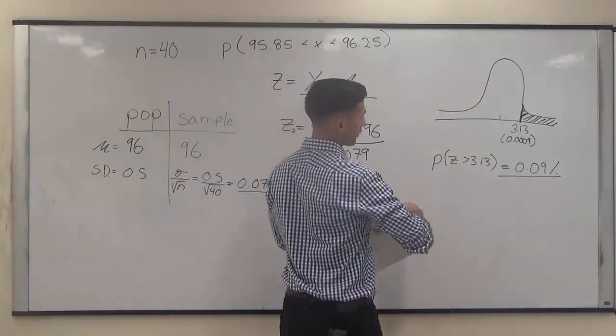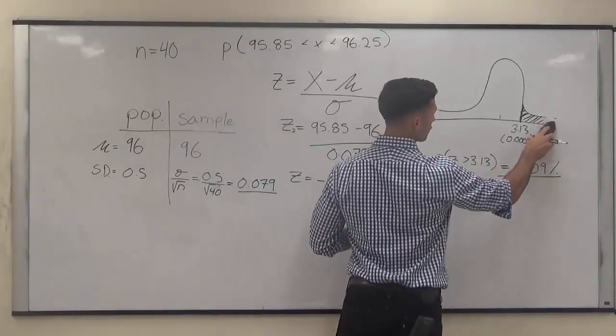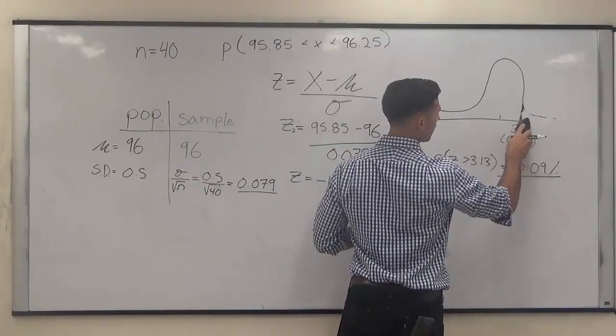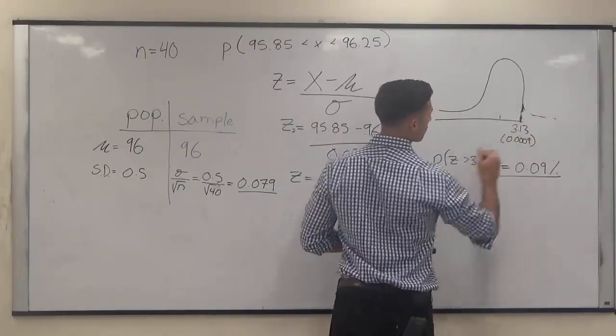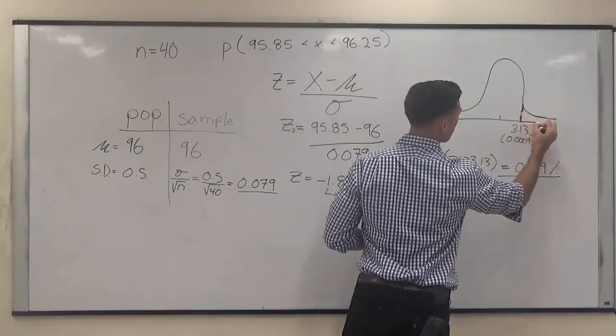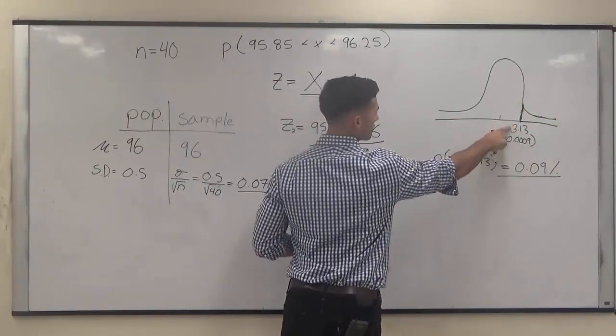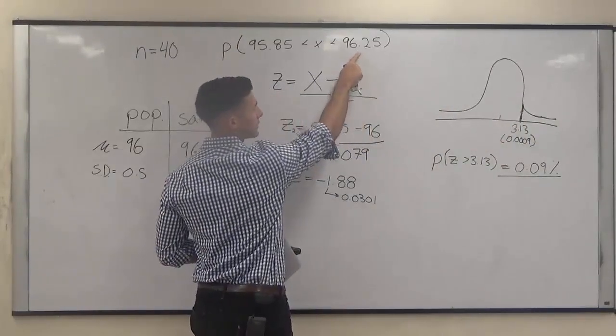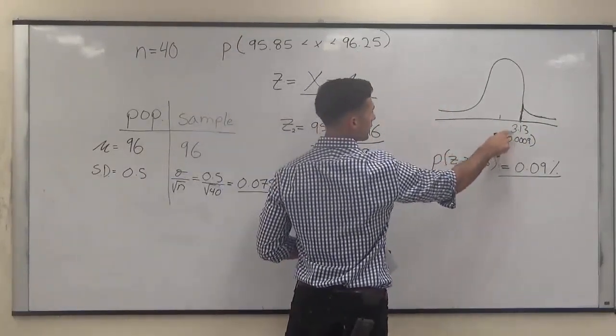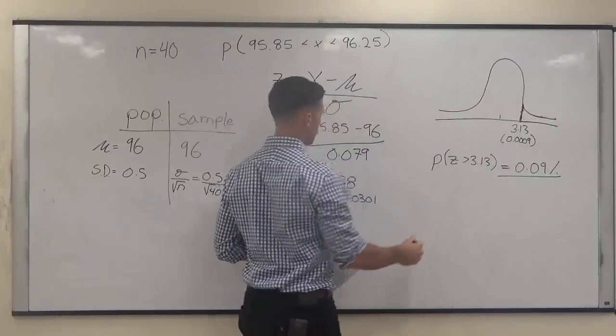So we're going to change our graph a little right here because we're no longer looking for this tail. We still have this earlier z-score and table score from when we were looking for 96.25, so we can keep that. It's a positive number, it's going to be on the right side.